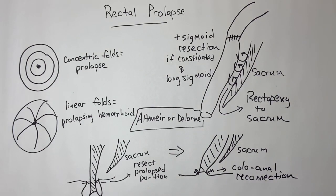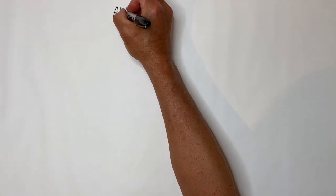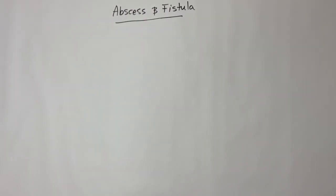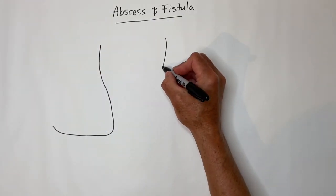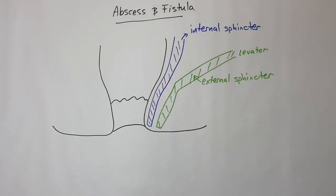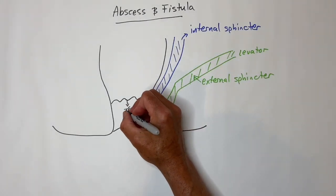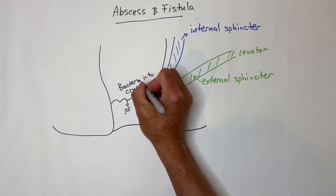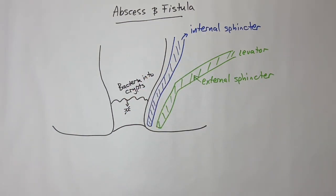Anal abscesses and fistula in ano are common questions and are common referrals to general surgeons. It is thought that they start by bacteria getting into anal crypts near the dentate line, so sometimes abscesses once they are drained can continue to drain, which suggests a fistula in ano.